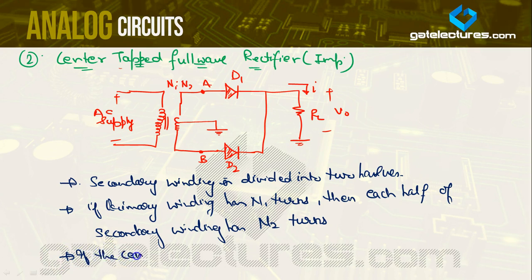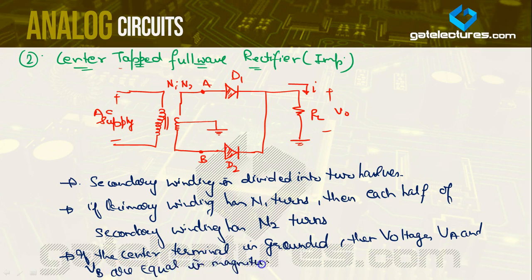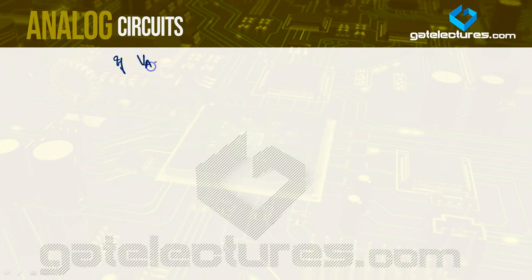Since each half has N2 turns, if the center terminal is grounded, voltages Va and Vb are equal in magnitude but opposite in polarity — Va = −Vb. So if Va = Vm·sin(α), then Vb = −Vm·sin(α). Let's now discuss the operation for two cases. Case 1: when α lies between 0 and π, Va is positive and Vb is negative.